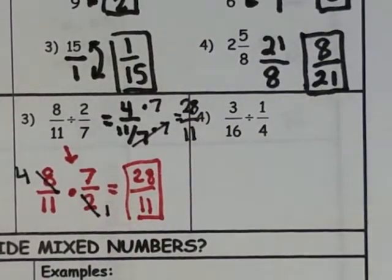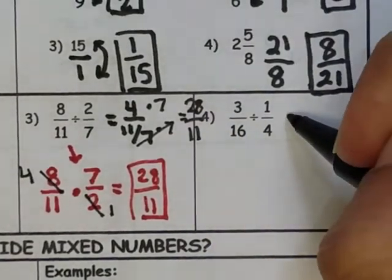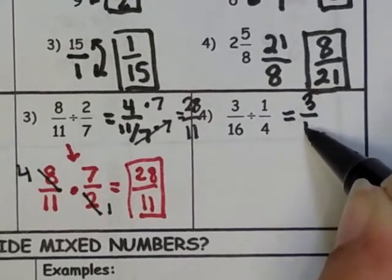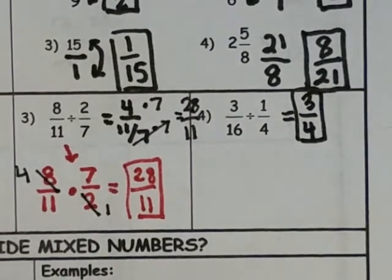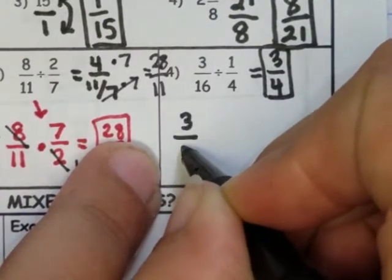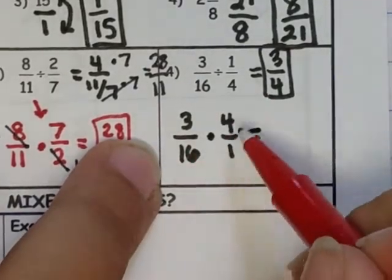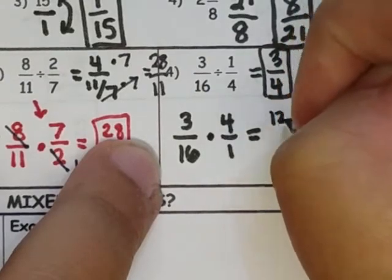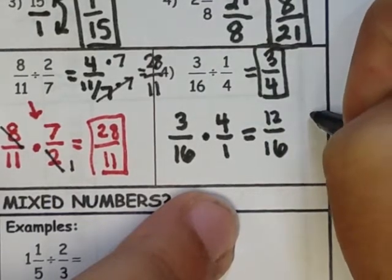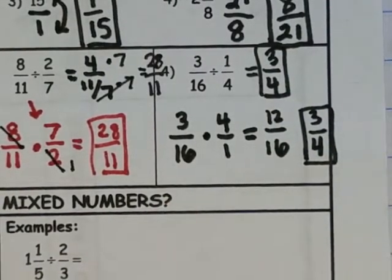Let's jump to number 4. This one looks nice: 3 divided by 1 is 3, and 16 divided by 4 is 4, so we'd expect 3 fourths. Let's practice multiplying by the reciprocal: 3 over 16 multiplied by 4 over 1. 3 times 4 is 12, and 16 times 1 is 16. Reduce — both are divisible by 4 — giving 3 fourths. Same answer. Multiplying by the reciprocal works, and sometimes you'll need it because dividing across doesn't always work.